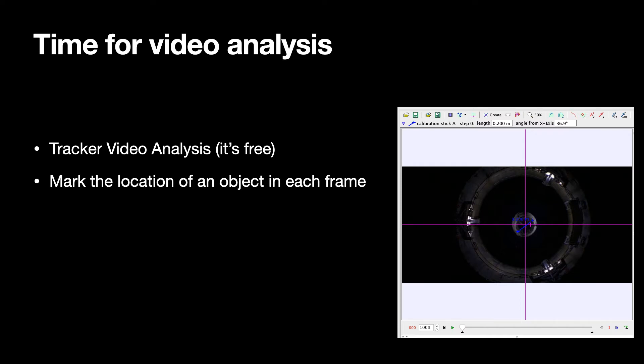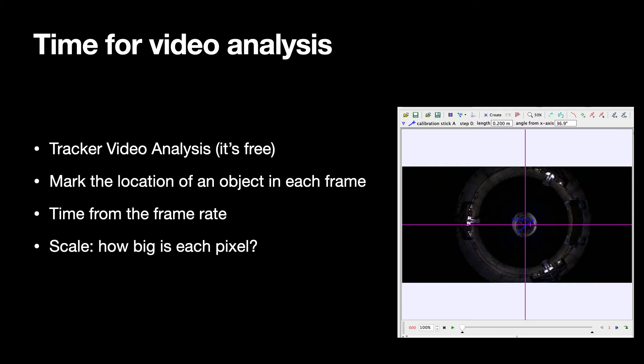But the basic idea is that you can take a video, and you can mark the location of an object in each frame of the video. Then you can also get the time data for that object by the frame number and by the frame rate. And then you can scale. And so I can know how far something moves on that frame by looking at the size of something on that. And so that's the pixel size. I need to know how big each pixel is in real units of some way. So that's the idea of tracker video analysis.